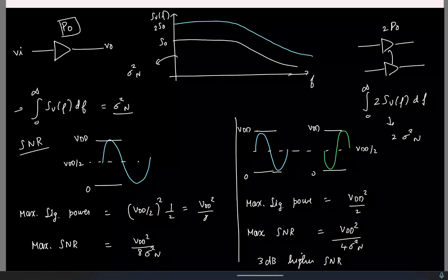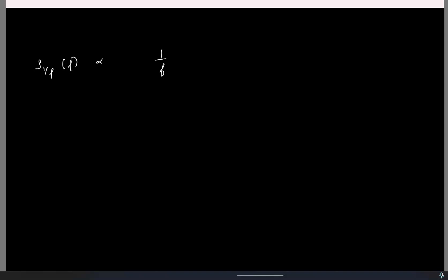So, a few more points. The calculations we have done considered only the thermal noise power, but even for flicker noise the procedure is identical. Just that in the power spectral density you add the power spectral density for the flicker noise. The flicker noise power spectral density is inversely proportional to the frequency and is also inversely proportional to the area.